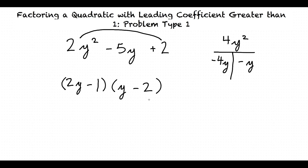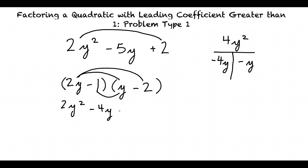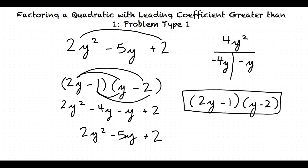We now have two factors that we have put together. Let's do a quick FOIL to check that when we multiply these together, we get our original quadratic expression. Combining like terms, we get 2y squared minus 5y plus 2. Therefore, 2y minus 1 times y minus 2 is our final answer. And that's how we factor a quadratic with leading coefficient greater than 1, by first multiplying our first term by our third term, finding two factors of that new result that add together to equal our middle term, and then using the principles of greatest common factor to get our final result.